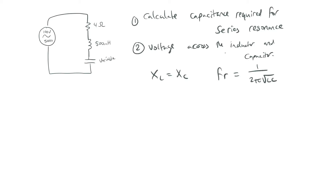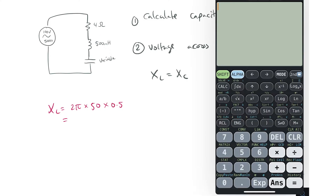To find XC we can just find XL first. XL is equal to 2π times 50 — which is the frequency in hertz — times 0.5 for the 500 millihenries. So that's 2π × 50 × 0.5.